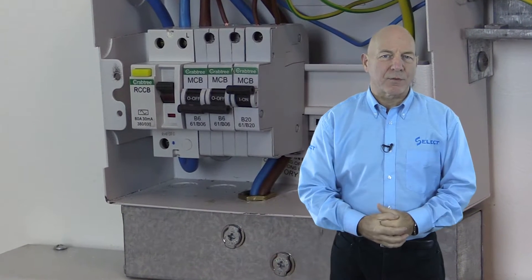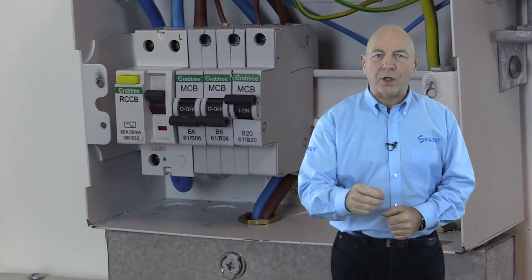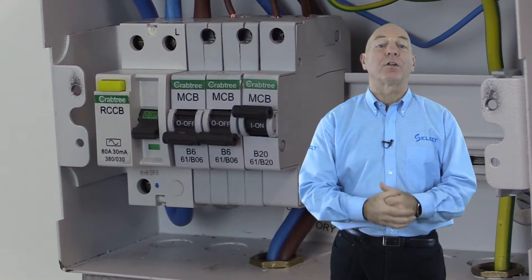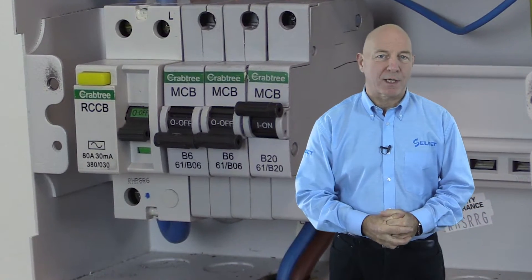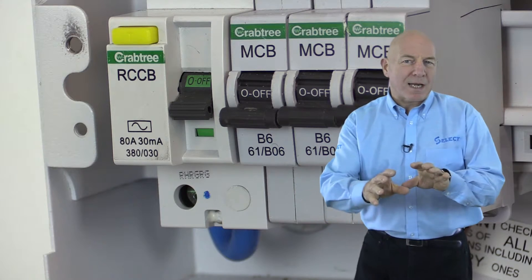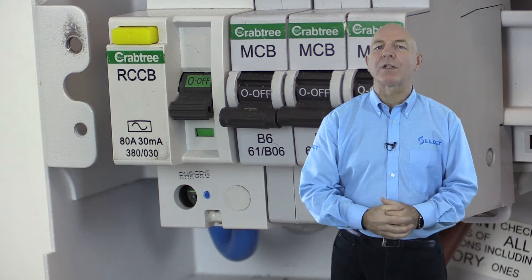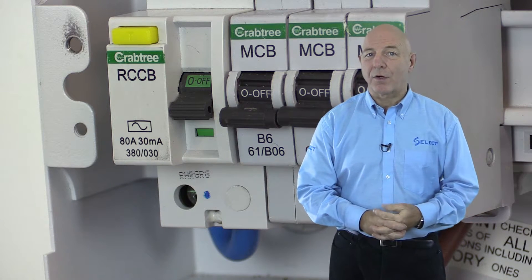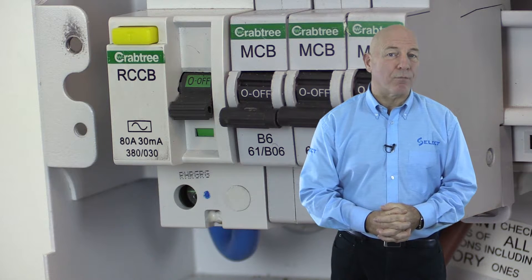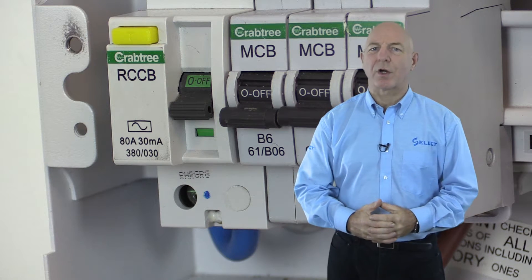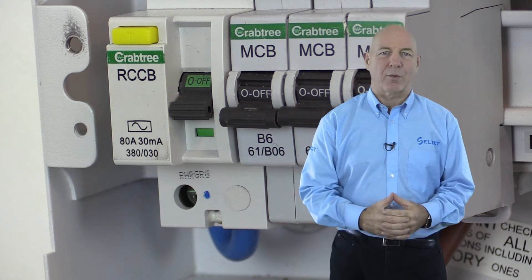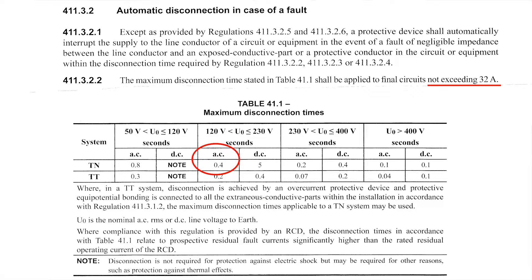Automatic disconnection of supply requires that under fault conditions the circuit breaker or fuse will operate and disconnect the supply to the line conductor within a specified maximum permitted disconnection time. For a TN earthing system, the maximum disconnection time for a final circuit with a protective device rating not exceeding 32 amps is 0.4 seconds, and for a distribution circuit and for a circuit with a protective device rating exceeding 32 amps is 5 seconds, as per section 411 of BS 7671.